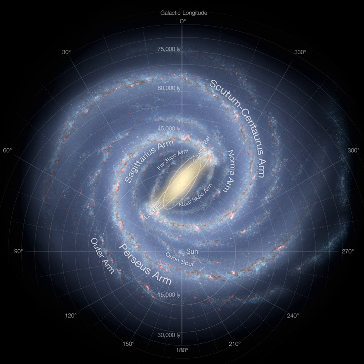During 1944, Walter Baade categorized groups of stars within the Milky Way into interstellar populations. He noticed that bluer stars were strongly associated with the spiral arms, and yellow stars dominated near the central galactic bulge and within globular star clusters. Two main divisions were defined as Population I and Population II, with another newer division called Population III added in 1978, which are often simply abbreviated as Pop I, II, or III.